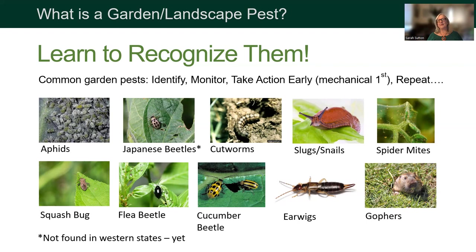Earwigs scared me when I was a kid with their little pinchers, but I had to learn they're really harmless — they don't chase children and pinch them. They're most active at night and like dark, damp places. They can be devastating on seedlings, garden flowers, and soft fruit. But one thing: they are a very active predator towards aphids, so if you see earwigs and there are aphids nearby, maybe just let them stay. One way to capture them is to roll up a piece of newspaper and leave it out on your driveway where it'll get damp at night — they'll crawl in and you can dispose of it.